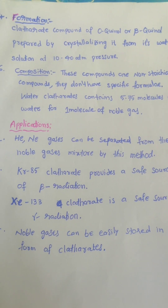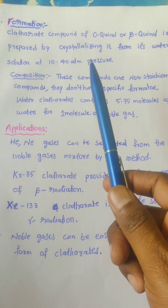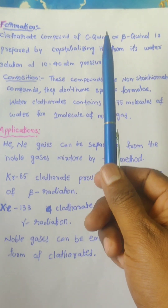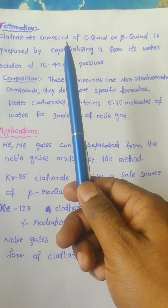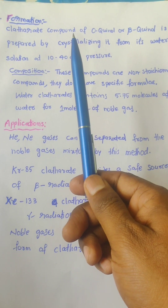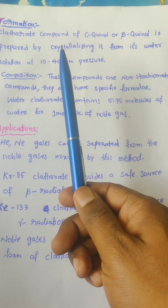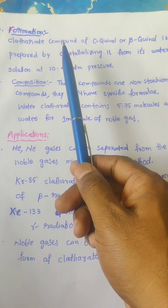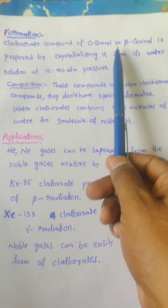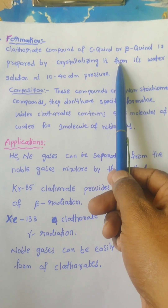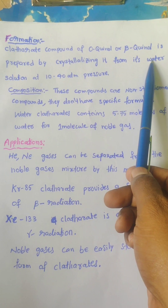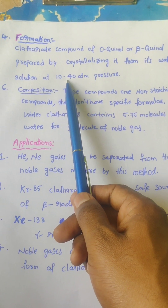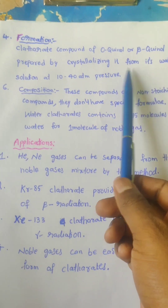The fourth point: we understand how these compounds are formed. Generally, clathrate compounds are formed when the crystal-forming liquids or solutions are cooled in the presence of noble gases. For example, the clathrate compound of beta-quinol is prepared by crystallizing it from its aqueous solution under 10 to 40 atmospheric pressure.